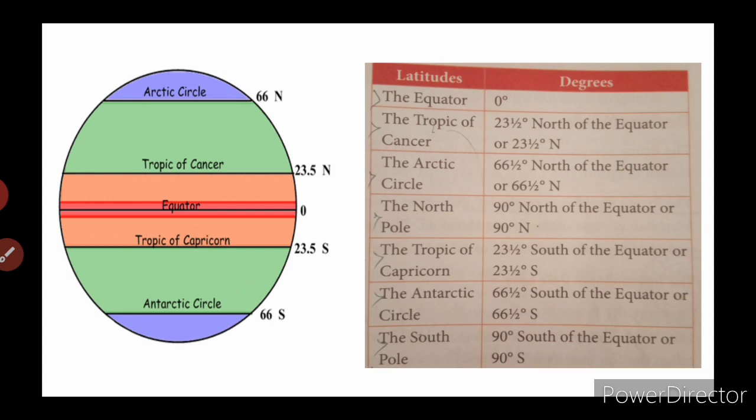The Arctic Circle is 66 and a half degrees north of the equator. The North Pole is 90 degrees north of the equator, or 90 degrees N. We can see it also in the chart.